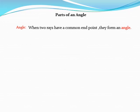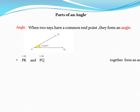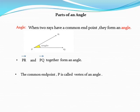Let us take an example. In the given example PR is a ray, PQ is also a ray. Both together form an angle. Here you can see a common endpoint we named it P.